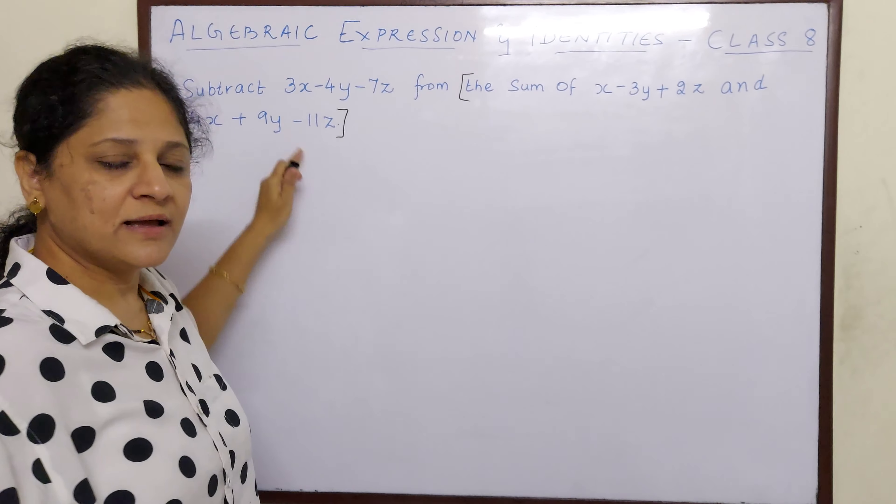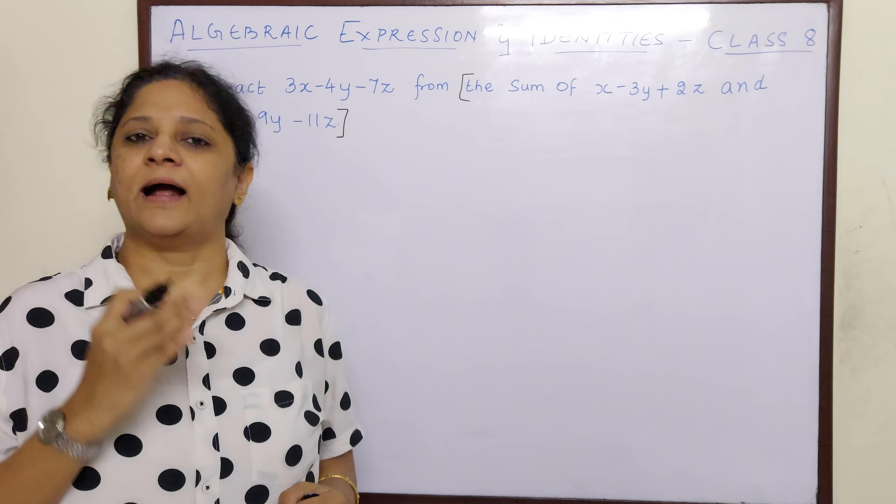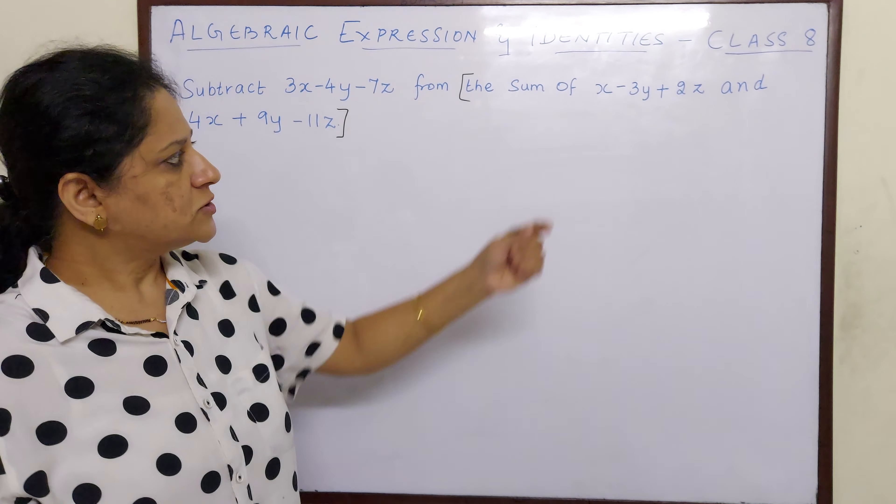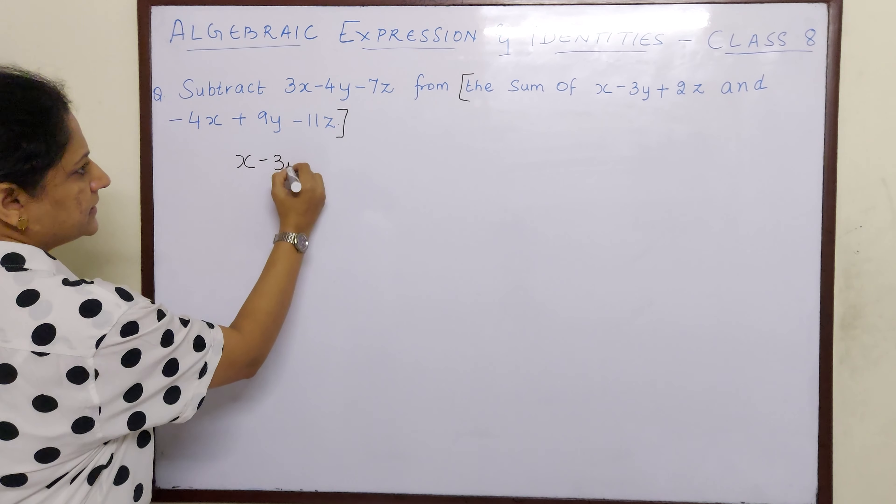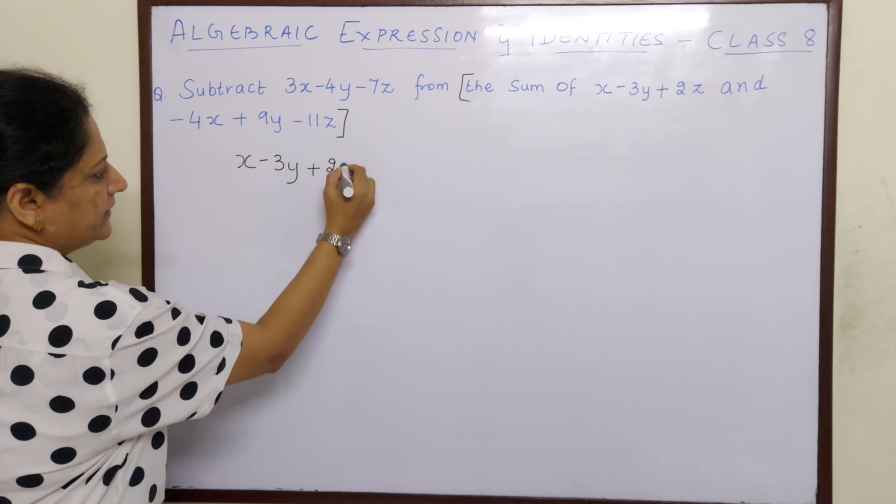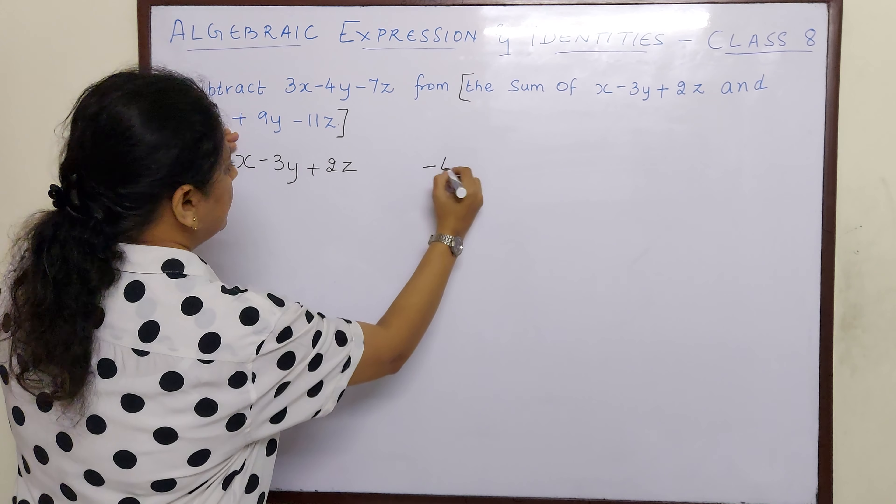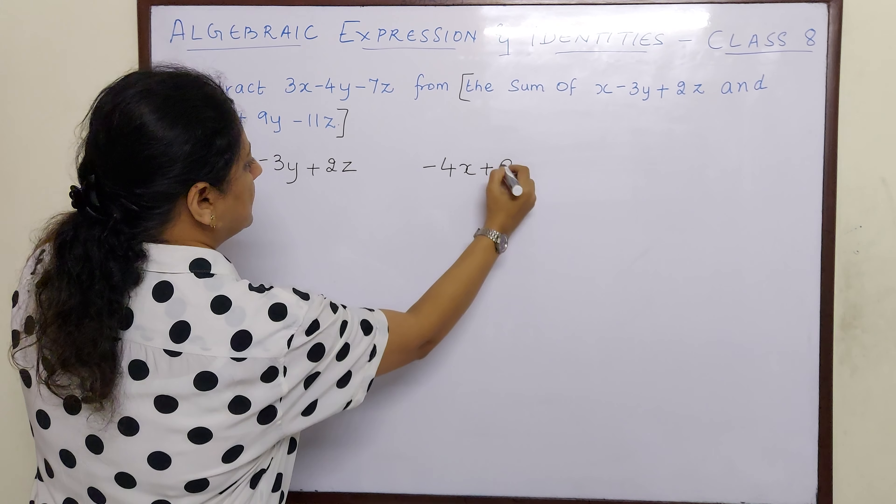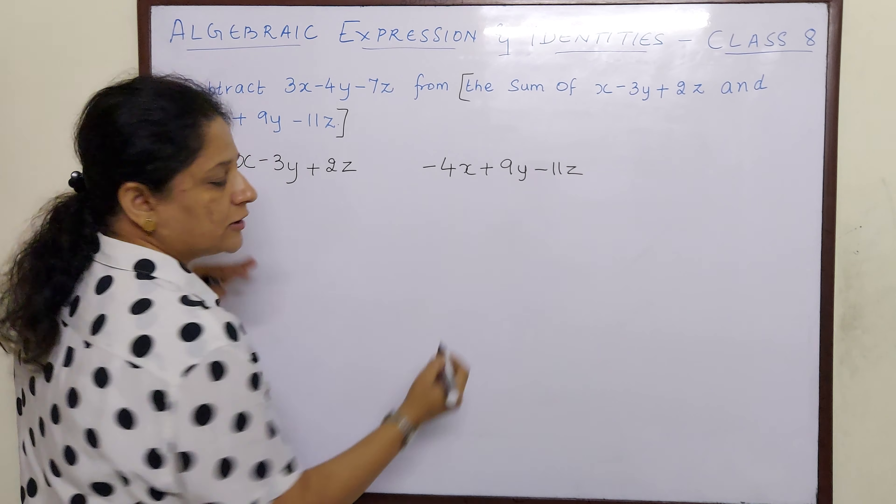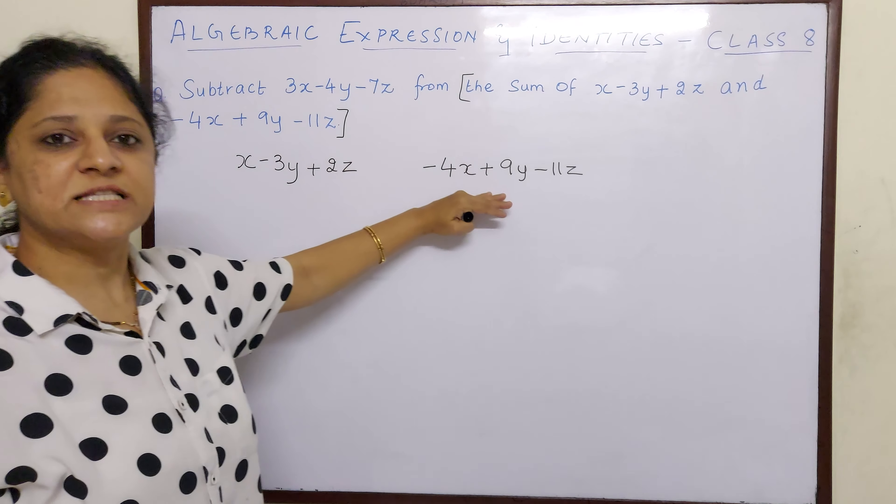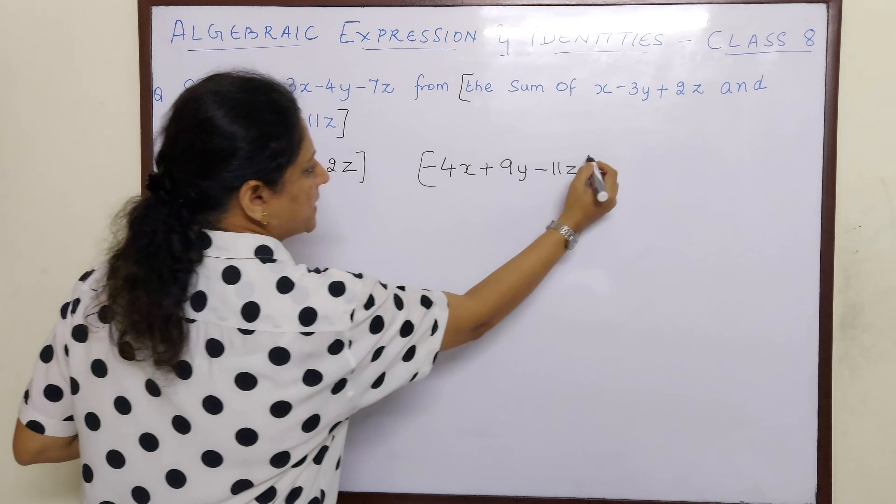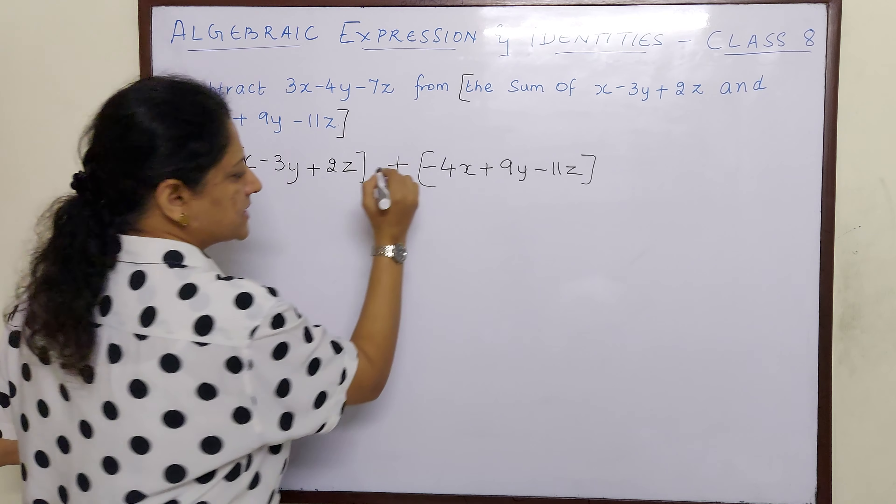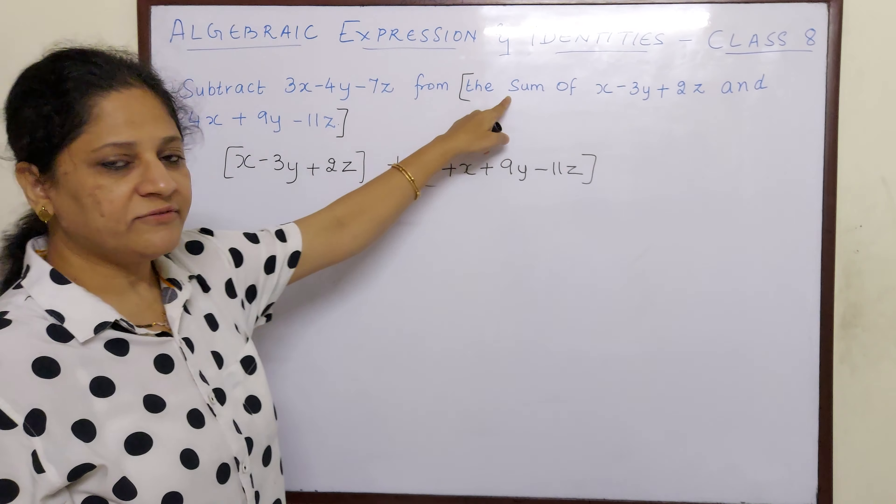In addition, we don't have to bother about the order, because 2 plus 3 is also 5 and 3 plus 2 is also 5. So I will write this algebraic expression here: x minus 3y plus 2z, and this expression here: minus 4x plus 9y minus 11z. Now we have to find the sum of both these algebraic expressions. In between these algebraic expressions, I will put the sign of addition, and here we will find the sum.